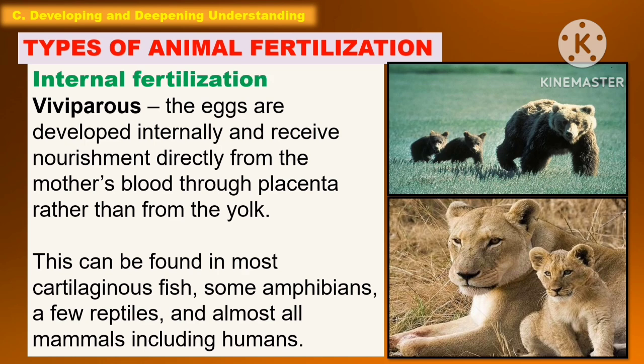Another type of internal fertilization is viviparous. It is where the eggs develop internally and receive nourishment directly from the mother's blood through the placenta, rather than from the yolk. This can be found in most cartilaginous fish, some amphibians, a few reptiles, and almost all mammals including humans.